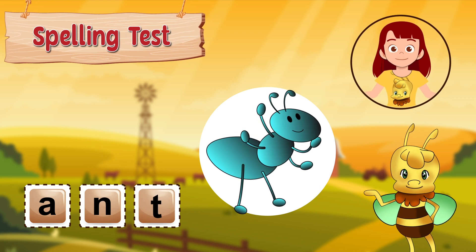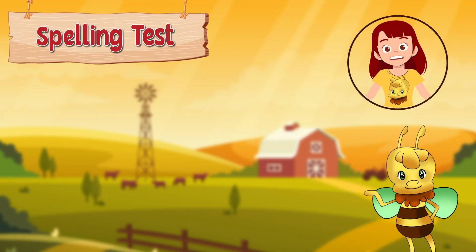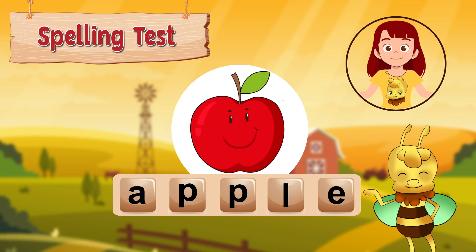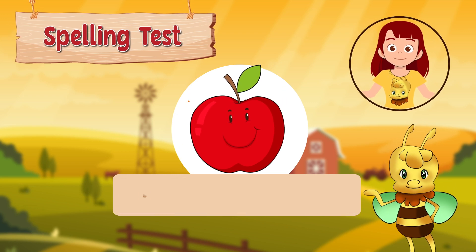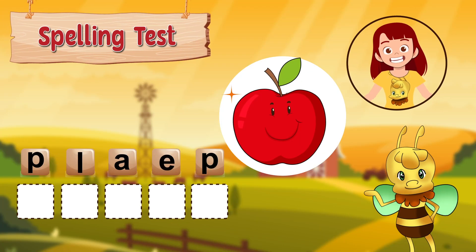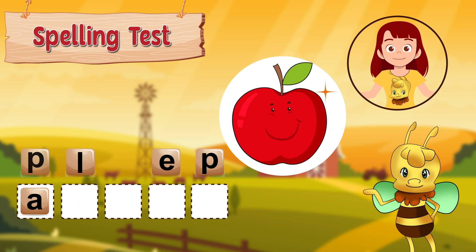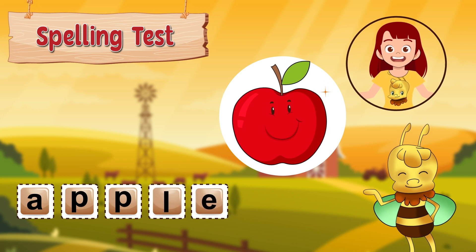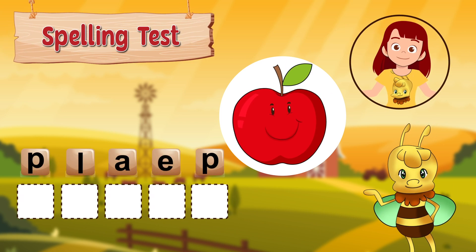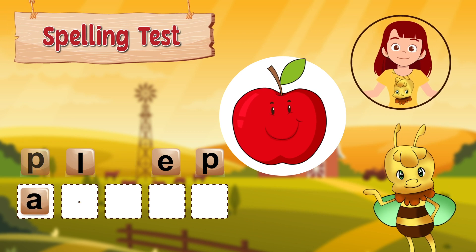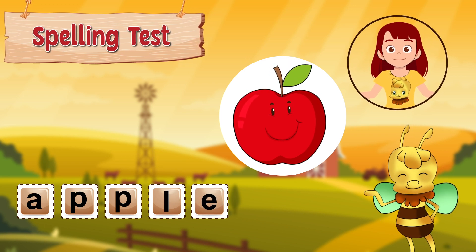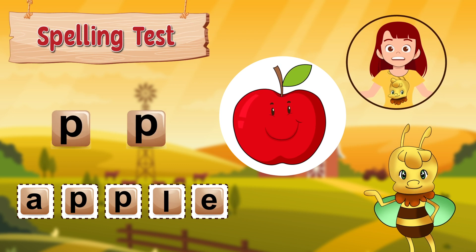Did you get it right? Time for the second word. Arby, can you put Apple on the screen? Thanks! An apple is a type of food. It is spelt A-P-P-L-E. Shall we say that together? A-P-P-L-E. Great job! Now it's your turn. How do you spell Apple? It's spelt A-P-P-L-E. Did you get it right? Remember, Apple is spelt with two P's.